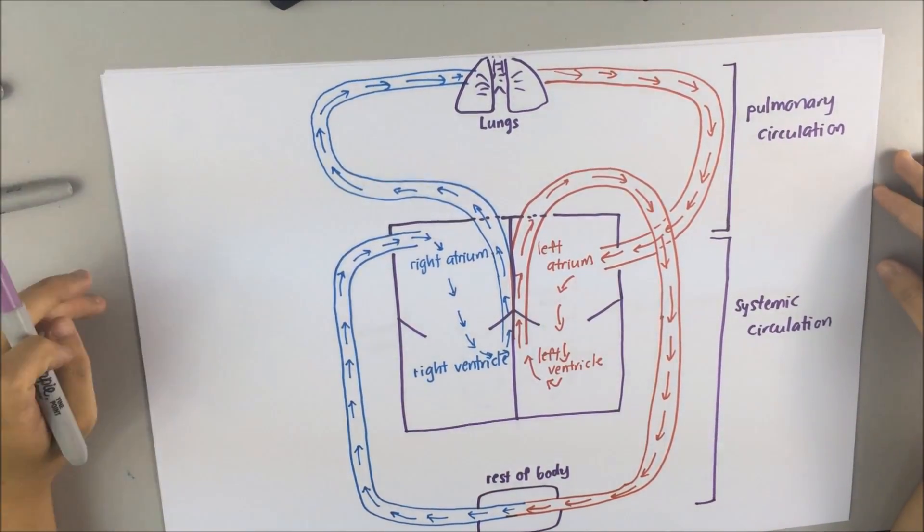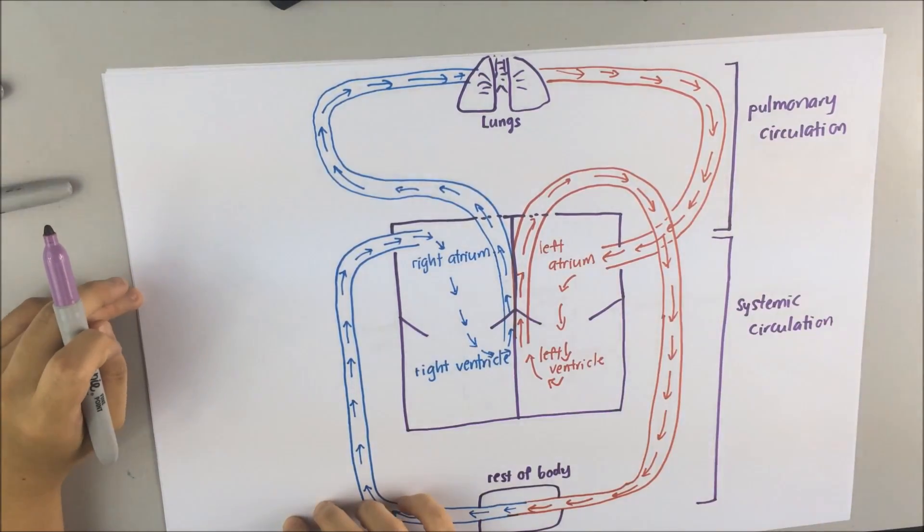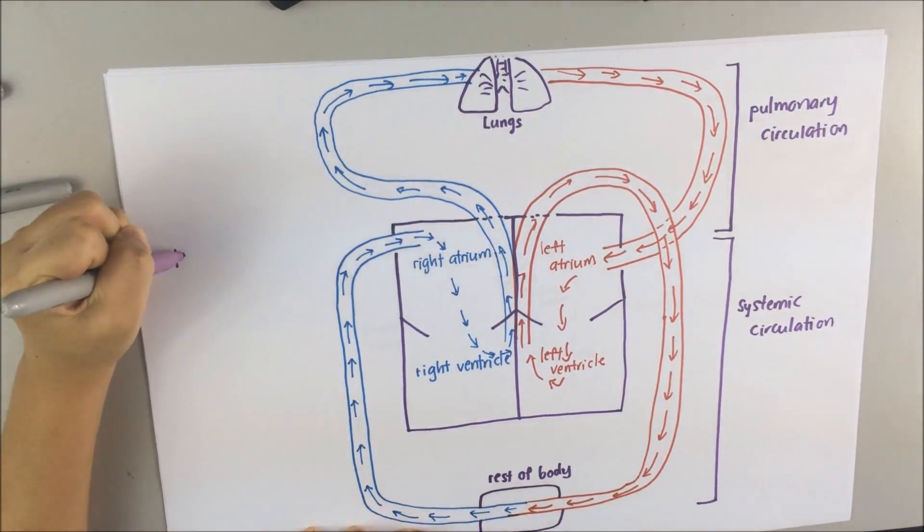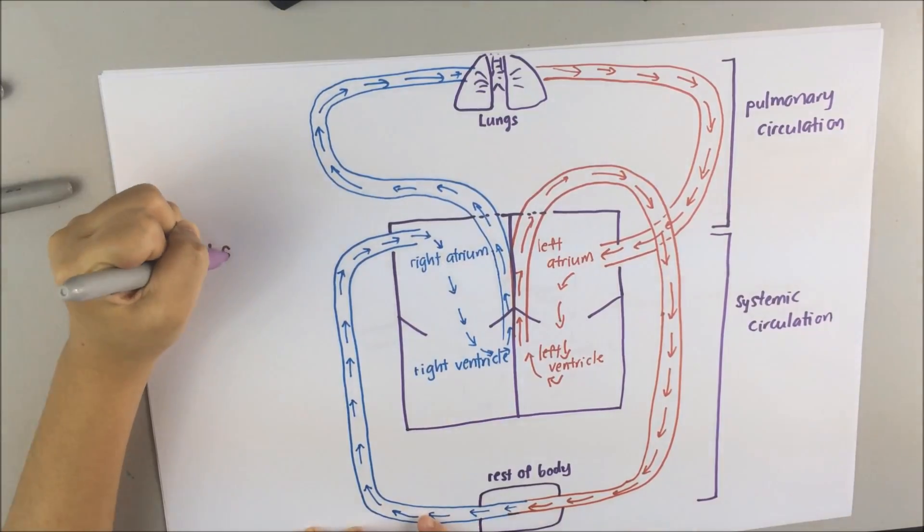This double circulation is important in keeping the oxygenated blood separated from deoxygenated blood. And it is also to make sure the blood pressure in the systemic circulation is kept higher than in pulmonary circulation.